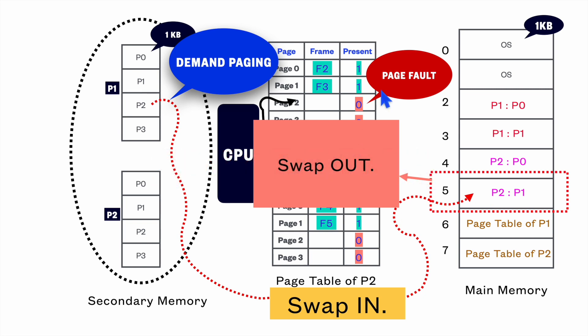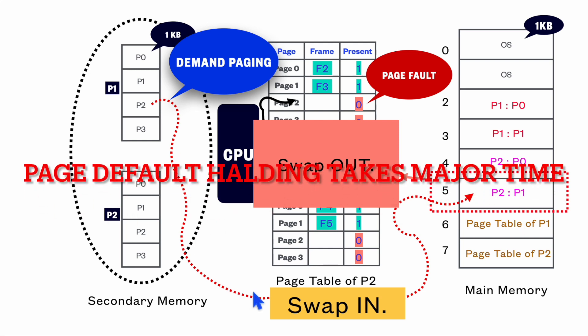In the case of page fault and swapping, major time is spent in the millisecond range because data has to be copied from secondary memory, which takes comparatively higher time. So this swap out and swap in will take a higher amount of time.